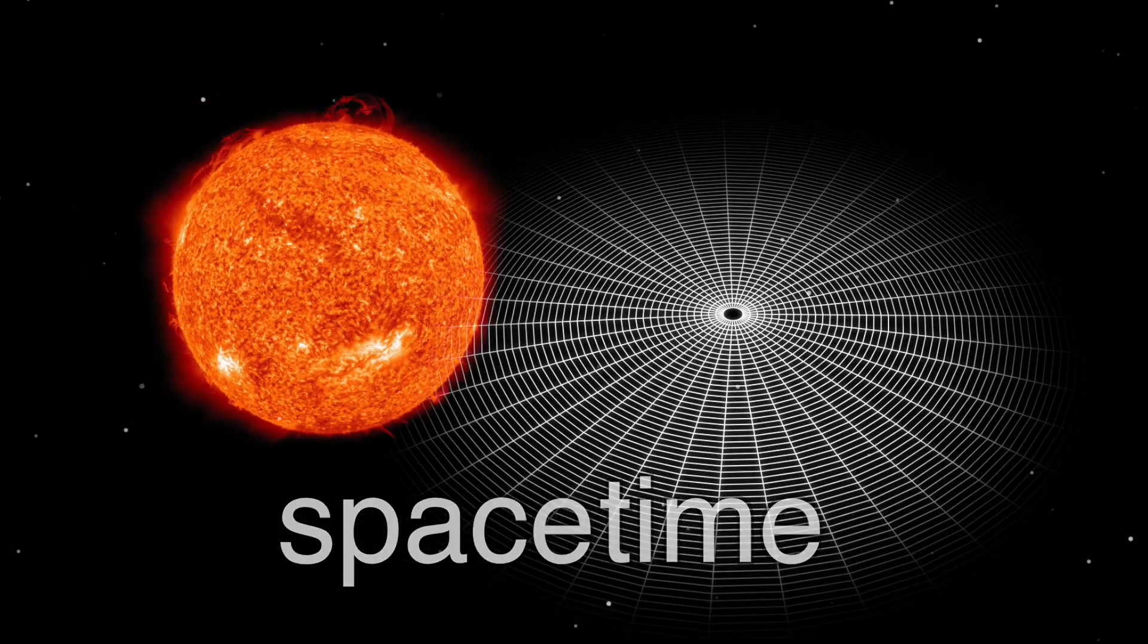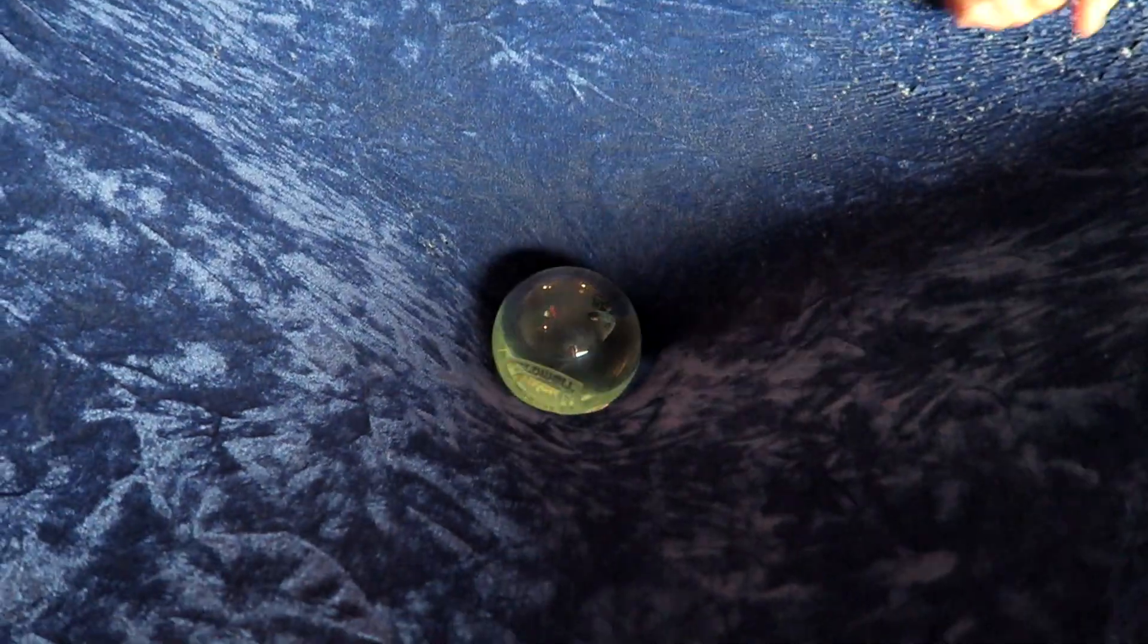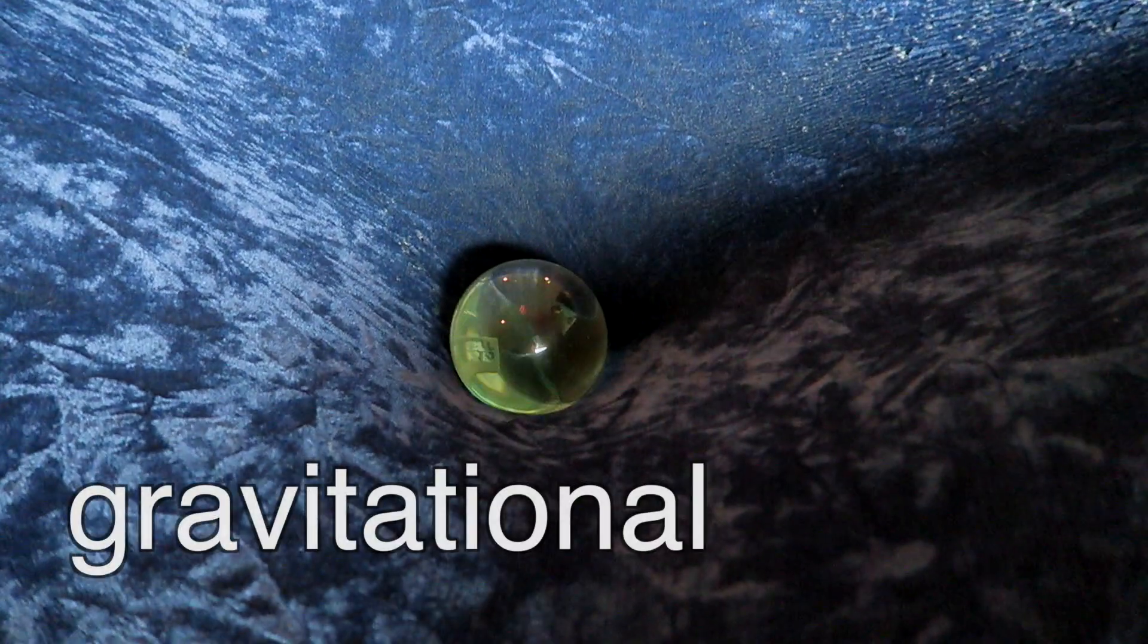In other words a huge mass like a star curves space and time like this ball placed on a sheet. And if mass could bend space then accelerating or moving masses could send out ripples in the sheet and we call those gravitational waves.